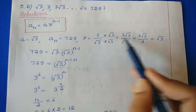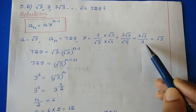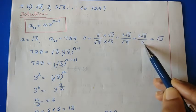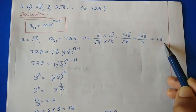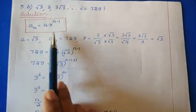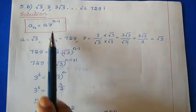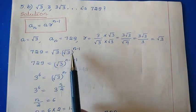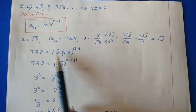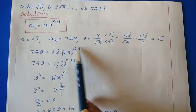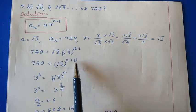Rationalizing: (3·√3) / (√3·√3) = 3√3 / 3 = √3. So r = √3. Now substituting into the formula: 729 = √3 · (√3)^(n-1). Since the base values are the same, we can add the powers: 1 + (n-1) = n, so 729 = (√3)^n.